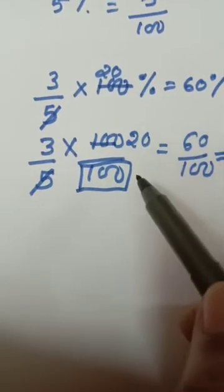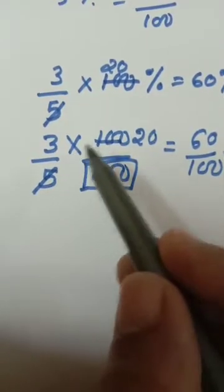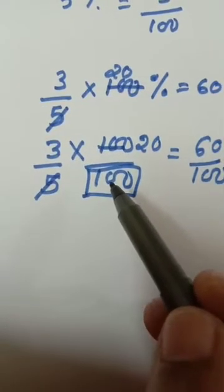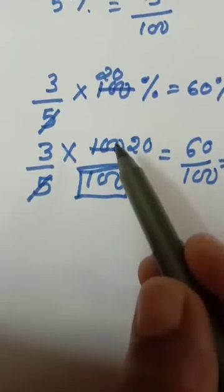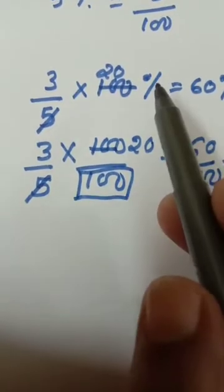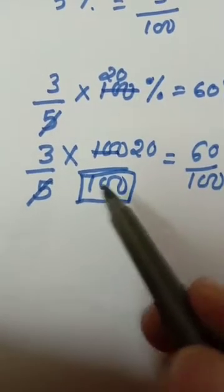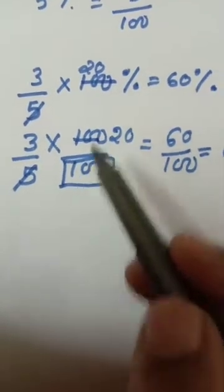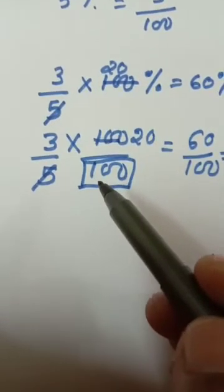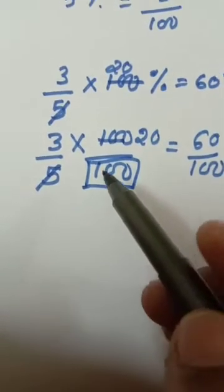3 by 5 multiplied by 100 by 100. That percentage sign means divided by 100. Both methods you can follow.